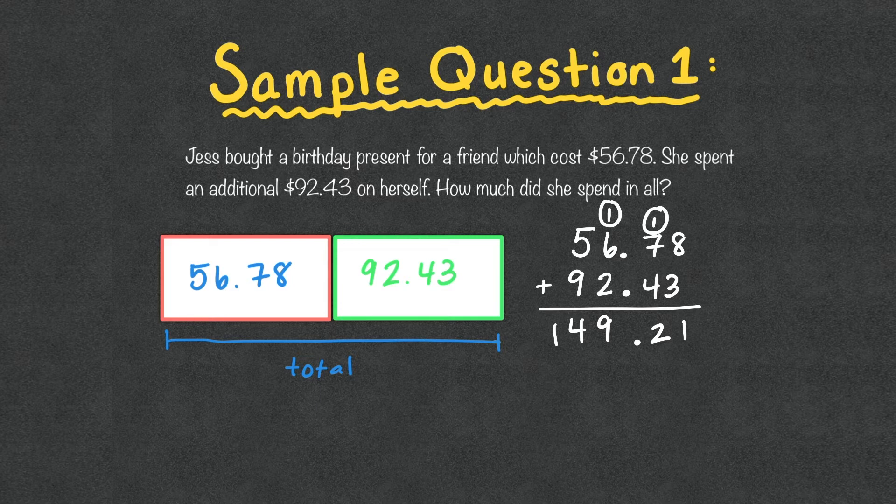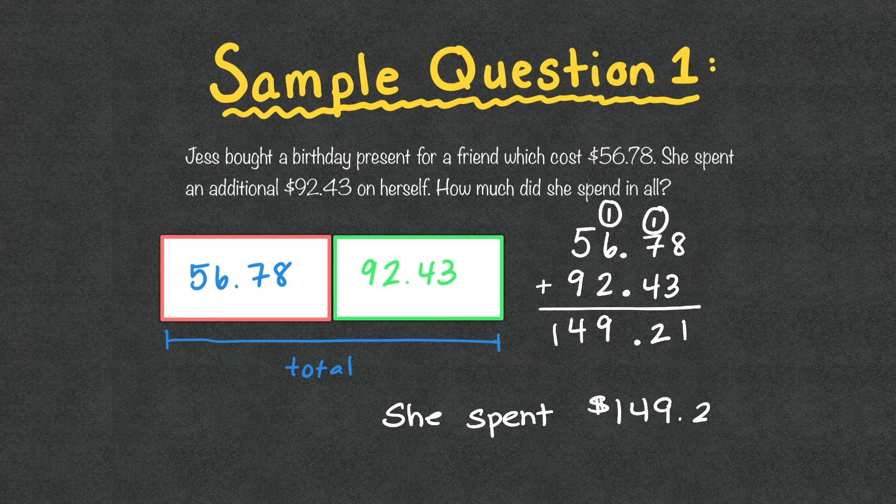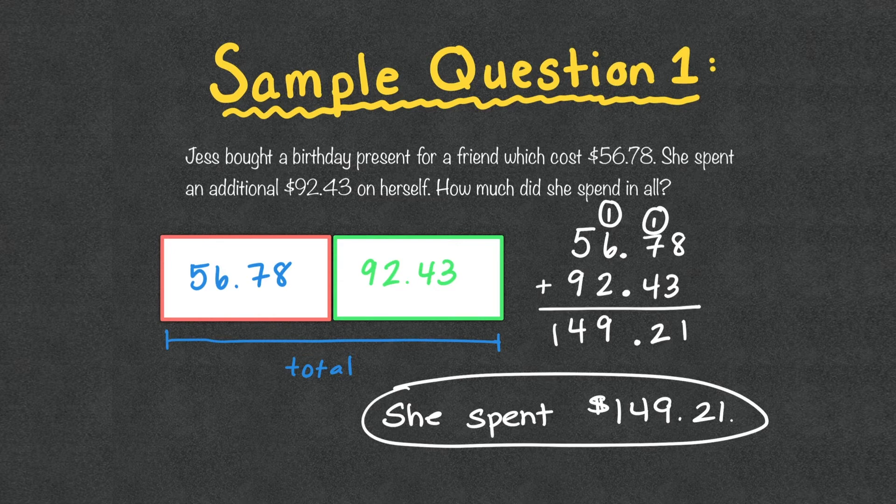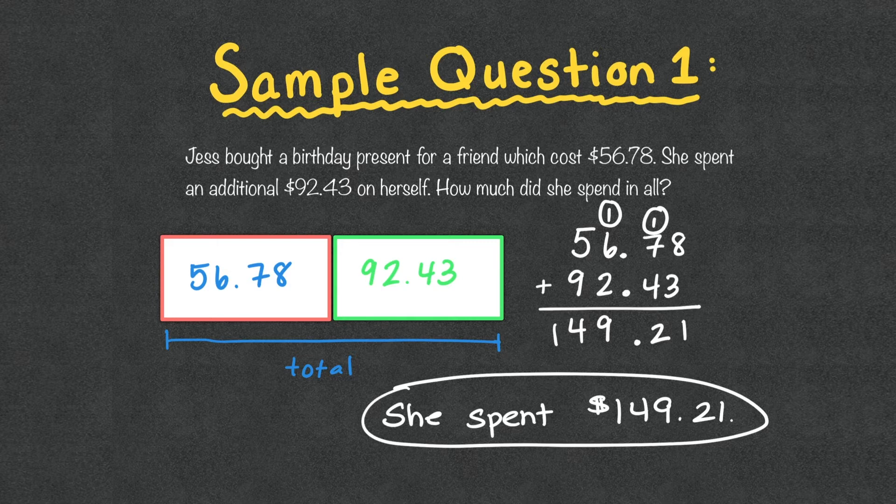Since 5 plus 9 is in the front, we do not have to carry everything over. We can just write 14. So we know that she spent $149.21. Some problems do require some context. So just make sure you do understand what that amount or what that number represents. In this case, it is dollars.